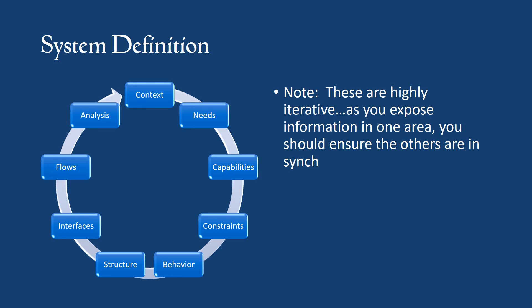All these things tie together to define the system, but they're highly iterative. As you expose information in one area, you may need to go and make sure other areas are in sync, or it may expose weaknesses or gaps in other areas. Keep in mind there's a continuum here and there's a lot of cross-connecting. It's not strictly cyclical or strictly iterative; there's a lot of cross-connections.